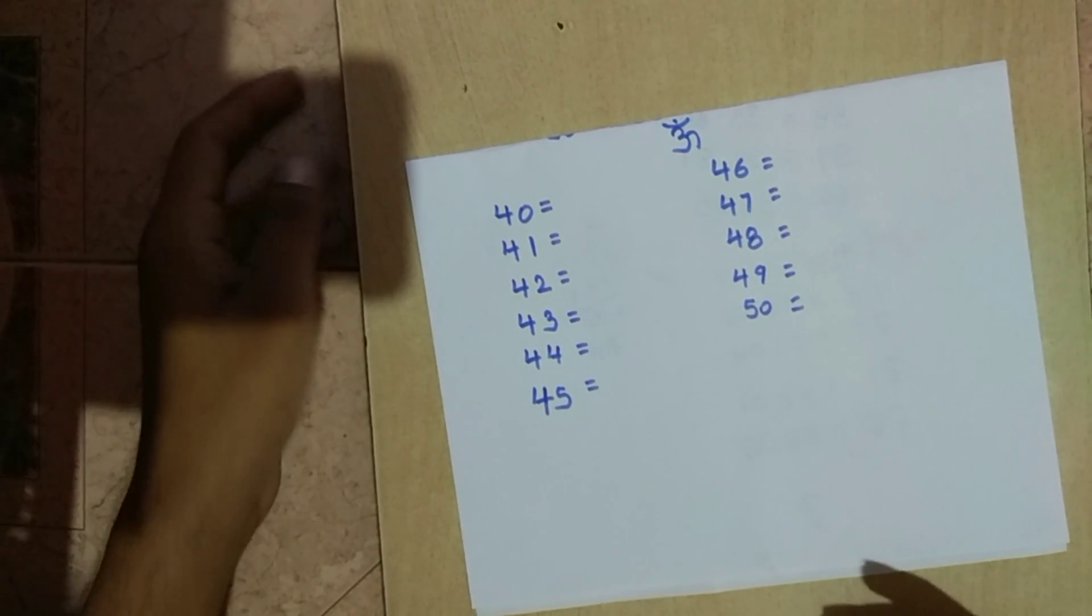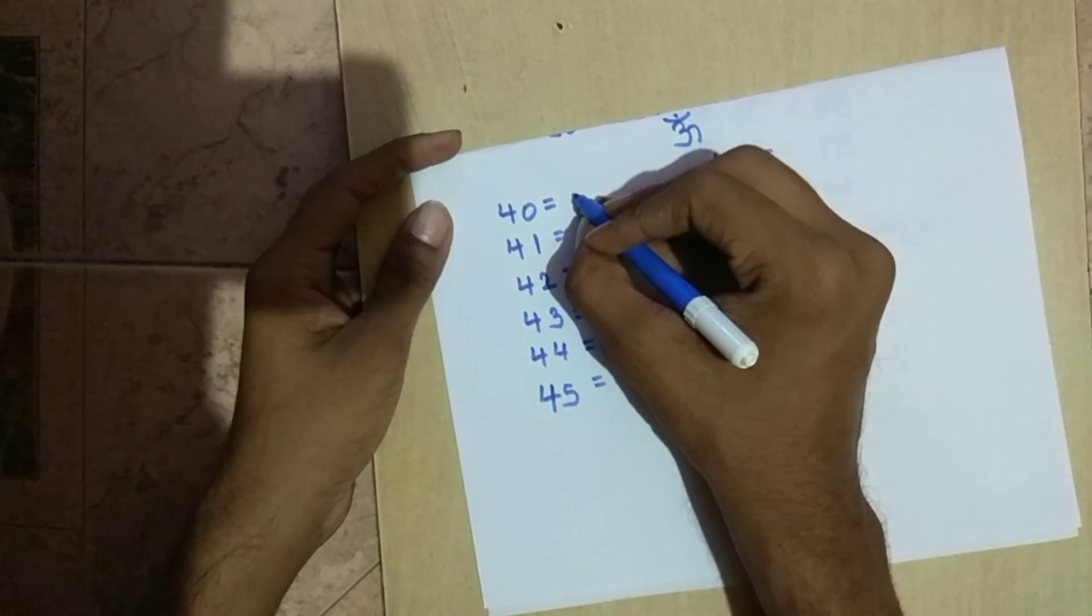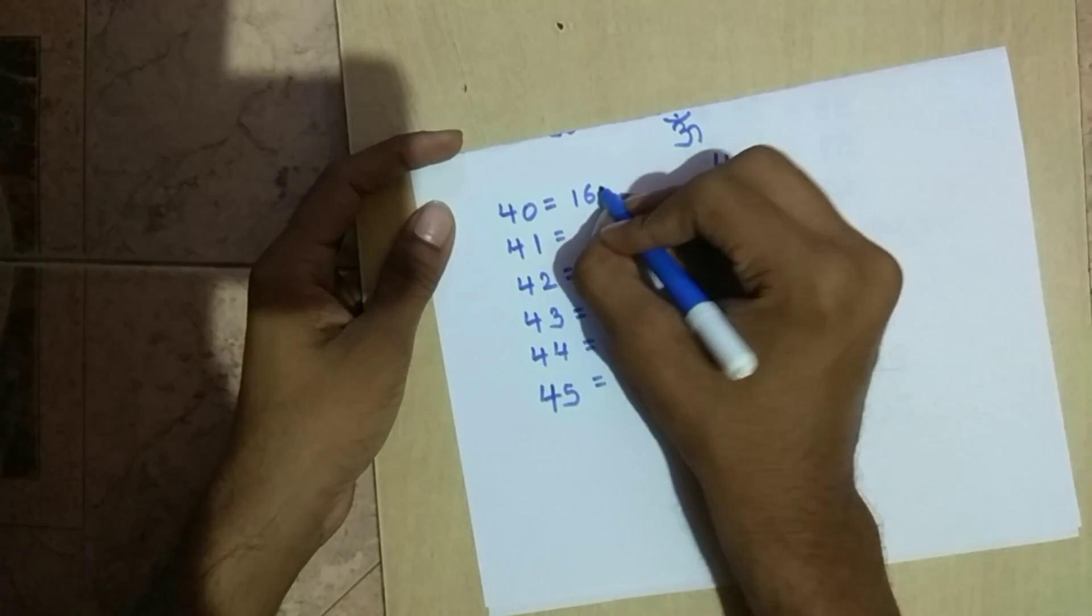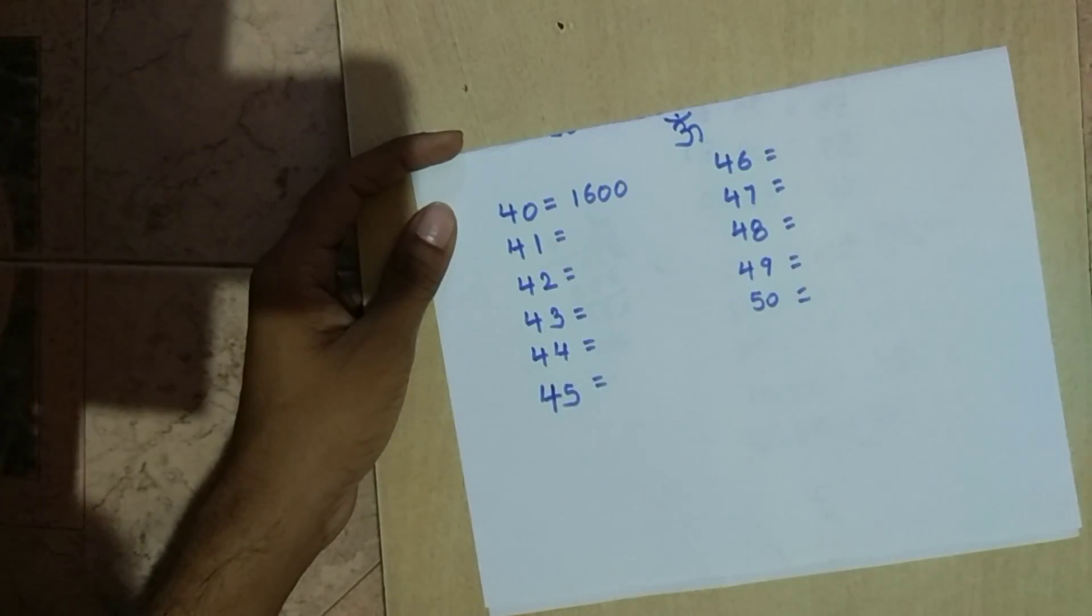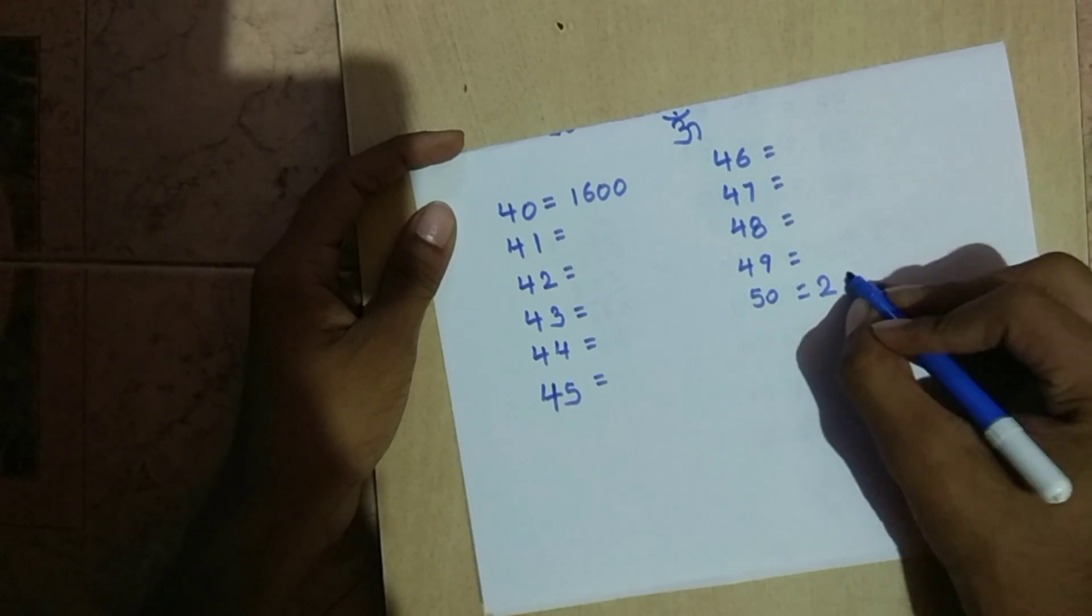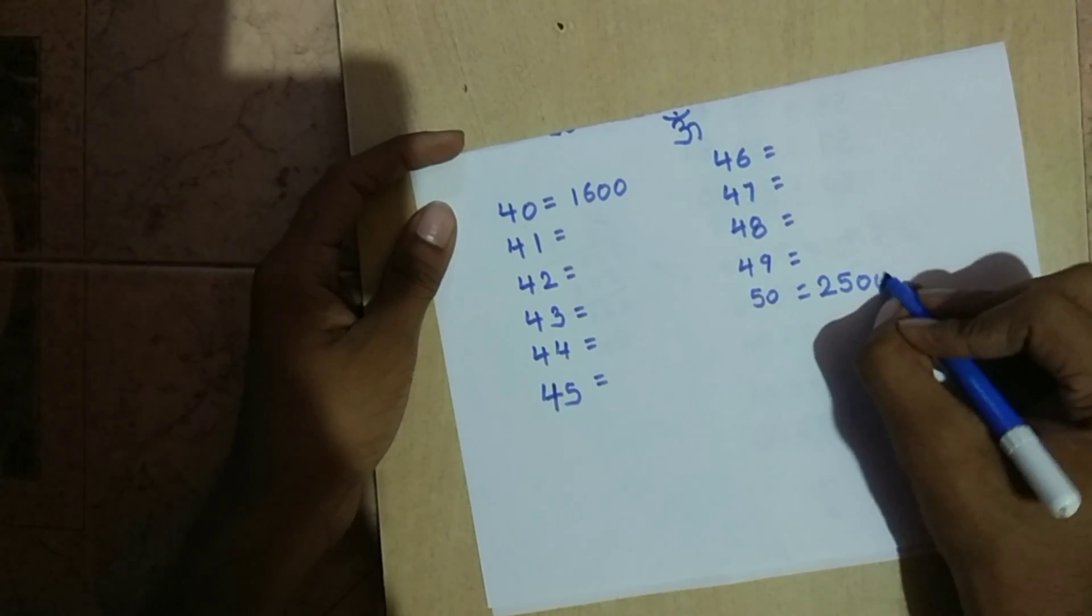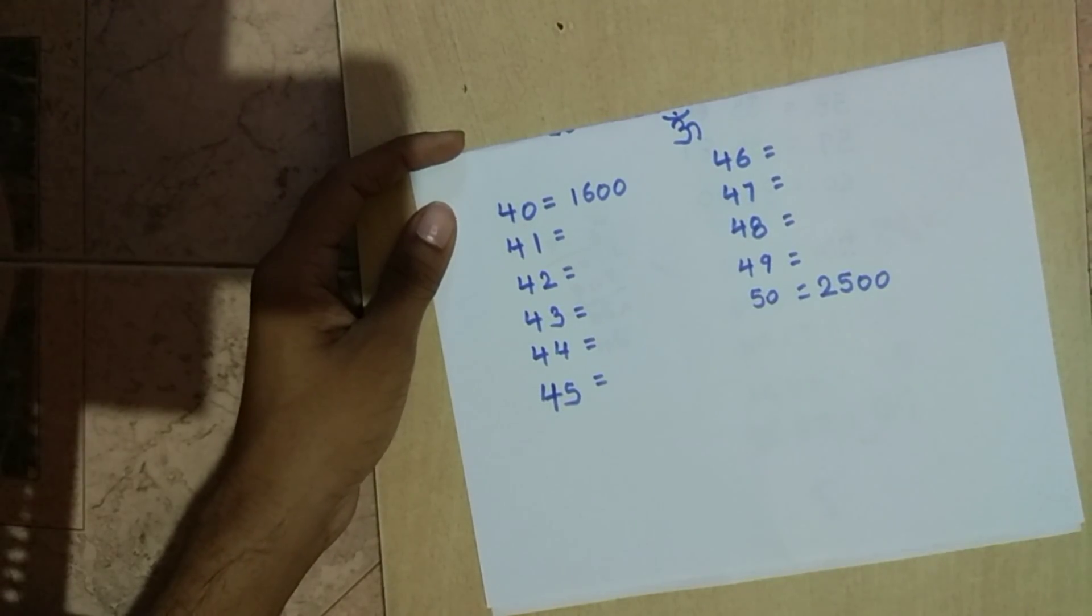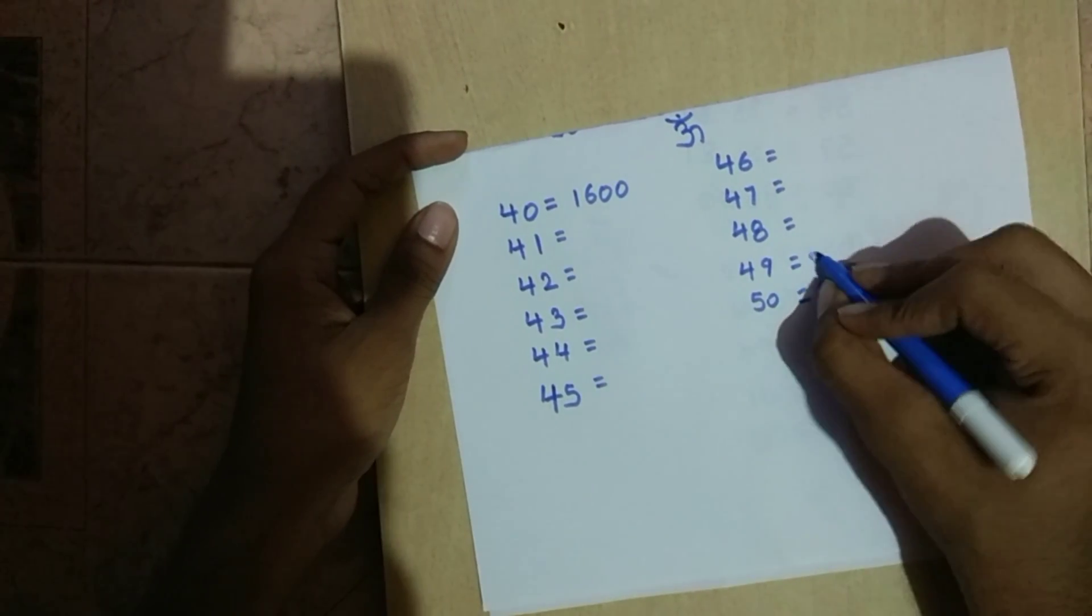Firstly, we shall write the square of 40 and 50, which are 1600 and 2500 respectively, as 4 square is 16 and 5 square is 25. We shall solve this in two parts: the first two digits and the last two digits.